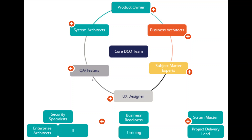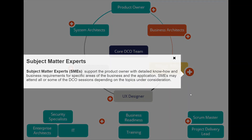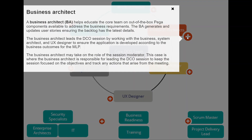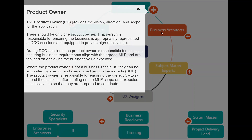This is the core DCO team. Subject matter experts support the product owner with detailed know-how and business requirements. Business architects educate the core team on the out-of-the-box components available to address business requirements — they lead the DCO session by working with the business team, system architect, and UX designer, acting as session moderators. The product owner provides the vision, direction, and scope for the application. There is always only one product owner, responsible for ensuring the business is appropriately represented at DCO sessions.